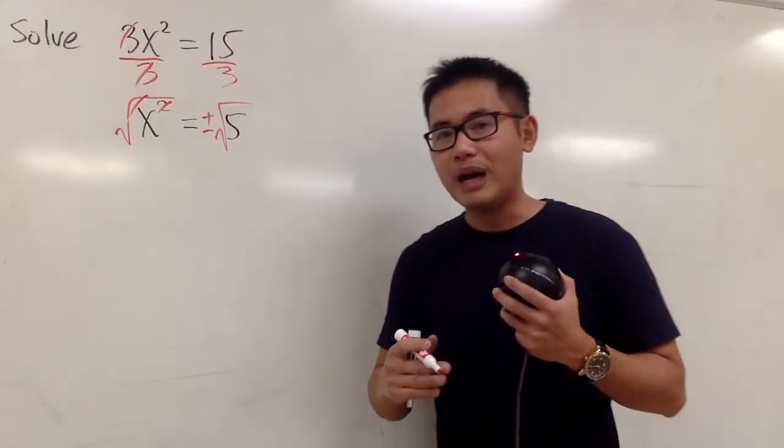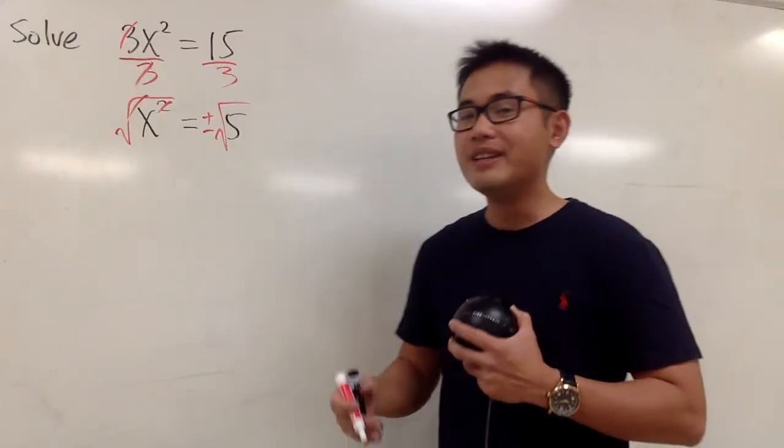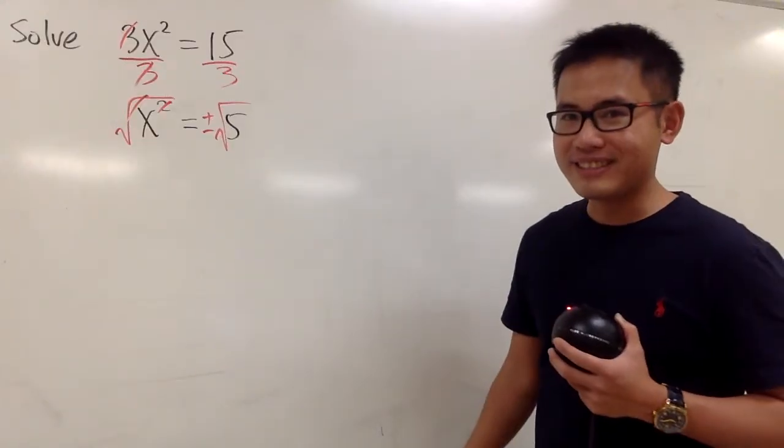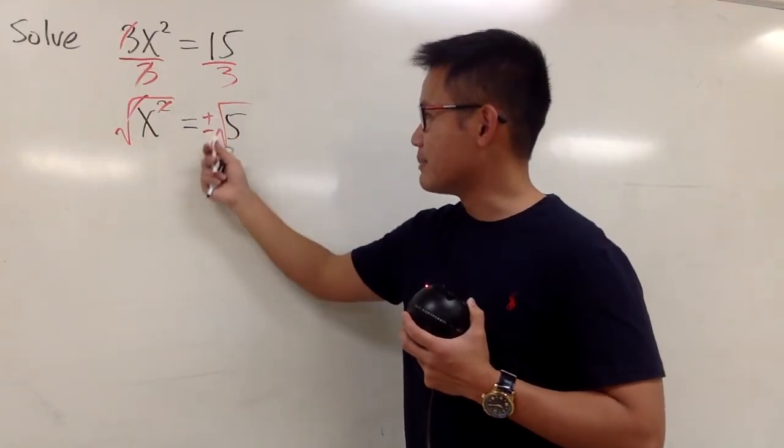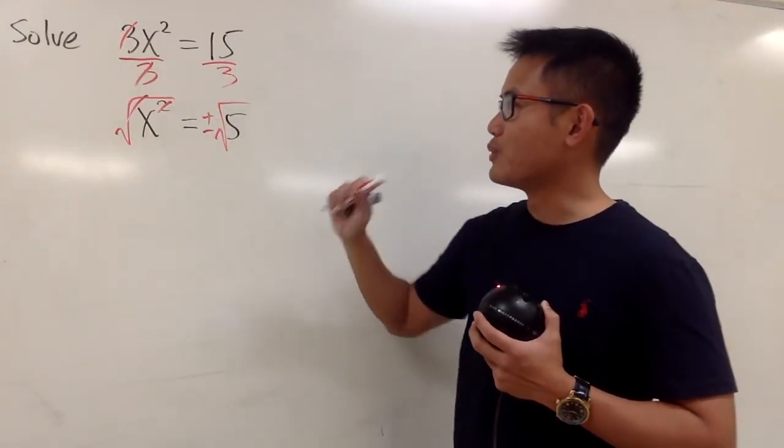You only need to worry about when you have, like, triangle equations. Sometimes you don't have to worry about the minus, right? But in general, when you take the square root on both sides, put down the plus-minus with the square root like that.